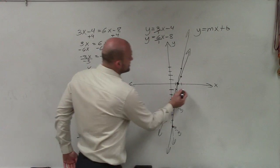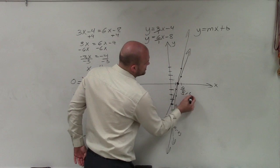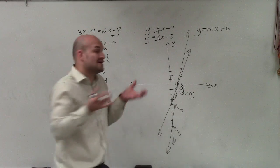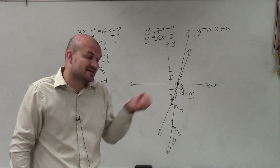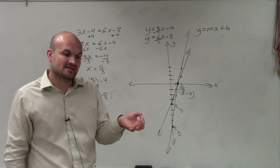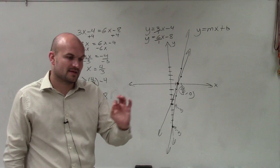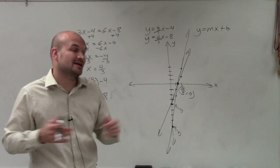So therefore, my intersection point is going to be 4 thirds comma 0. Since they intersect at one point, this is now a consistent solution, our consistent system, with a independent solution, since they only intersect once.